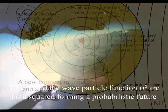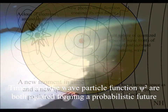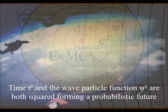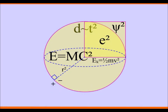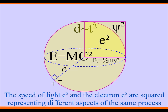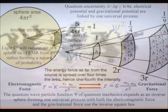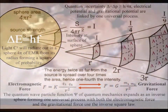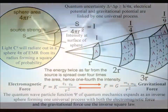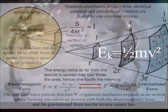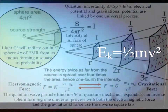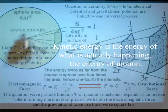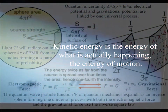Time and the wave particle function are both squared, forming a square of future probability. The speed of light and the electron are squared, representing different aspects of the same process. As potential light photon energy transfers into kinetic energy of the electron, velocity is squared as a probabilistic future unfolds.